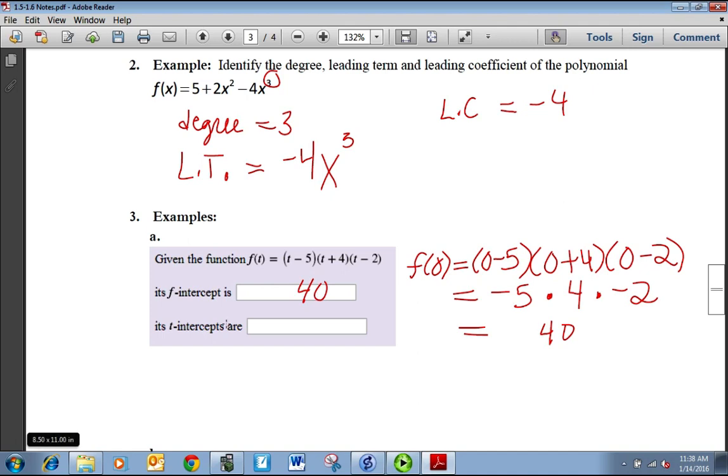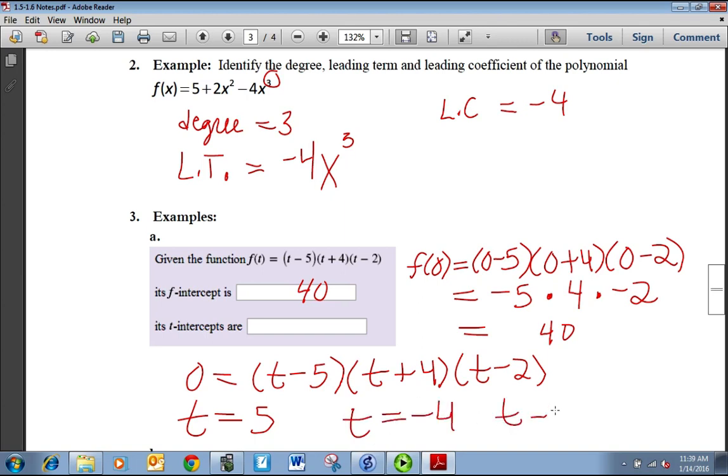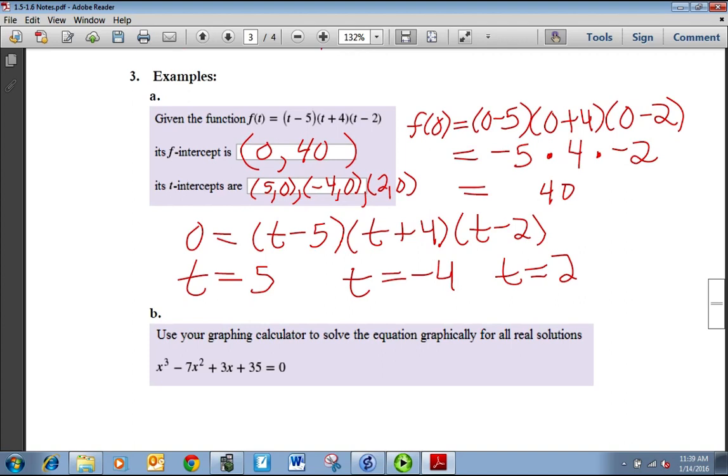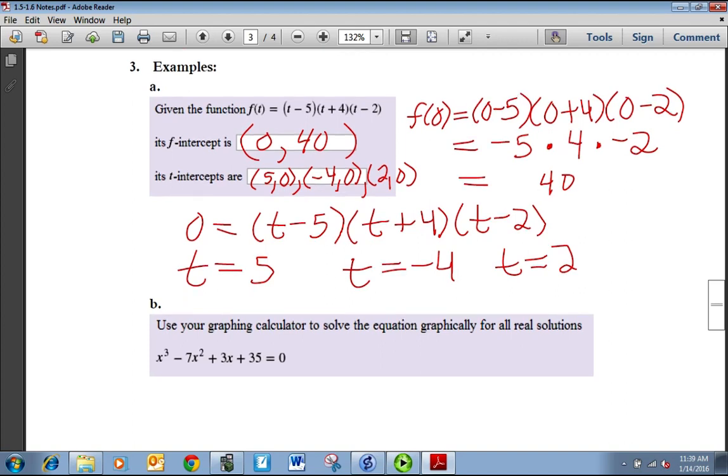An example of a polynomial: f(t) = (t-5)(t+4)(t-2). For the f-intercept, that's when we set t equal to 0. So f(0) = (0-5)(0+4)(0-2), that's -5 times 4 times -2, so that's going to be positive 40 for the f-intercept. For the t-intercept, you're going to set f(t) equal to 0. We get t = 5, t = -4, and t = 2. To list them properly, it should be (5,0), (-4,0), and (2,0). Because intercepts are ordered pairs, they're points.